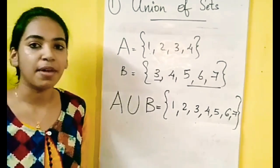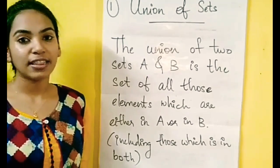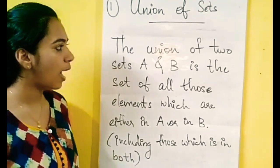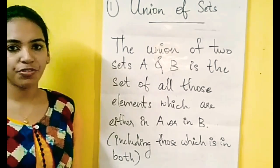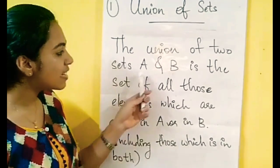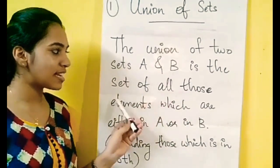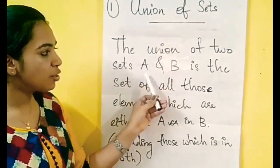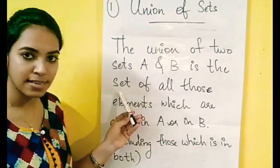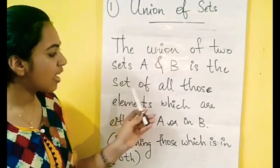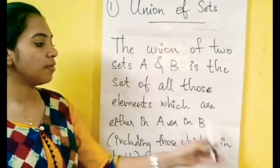So, this is our definition. That is why I am going to explain the Venn diagram. The definition of the union of two sets A and B — where A and B are arbitrary sets — is the set of all those elements.